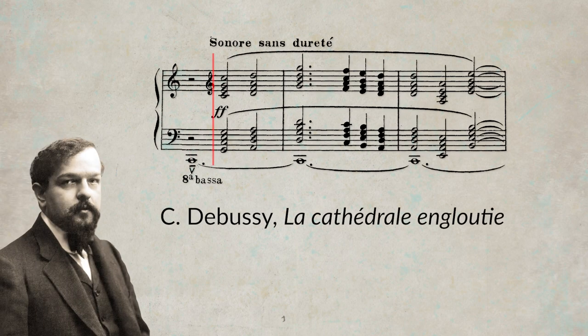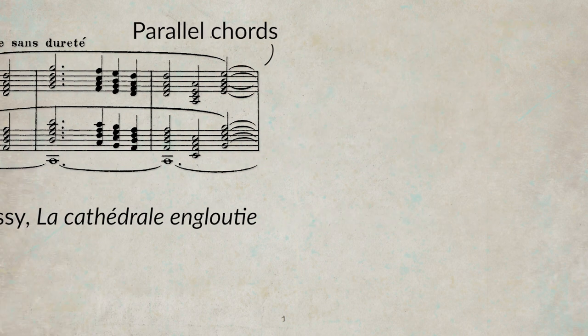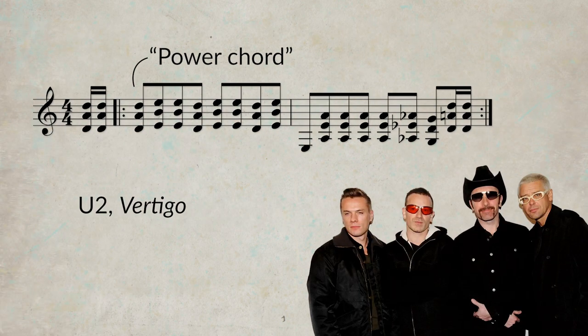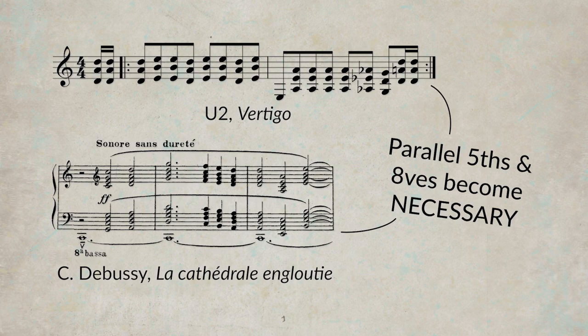If we look at other styles of music where the independence between parts is not as important, parallel fifths and octaves are everywhere. The music of Debussy represents a detachment from tonal harmony, and parallel chords are used for coloristic effects. The power chord, a quintessential feature of rock music, requires parallel fifths and octaves to give the music a richer sound. For each of these, the function of parallel fifths and octaves serves a different purpose, which is often a necessity in those particular aesthetics of music.